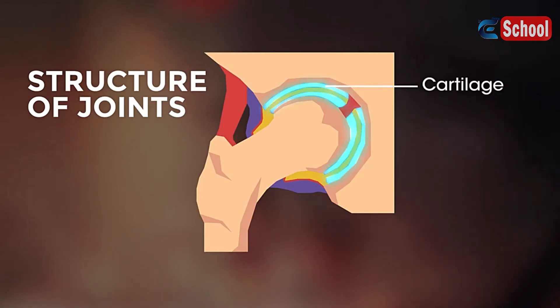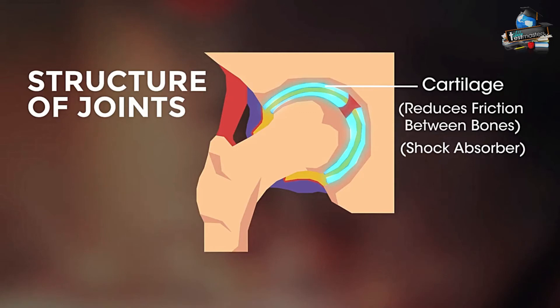Cartilage is a soft substance that cushions between bones to reduce the friction between them and also acts as a shock absorber. When the cartilage is worn down, arthritis occurs, which can be very painful.